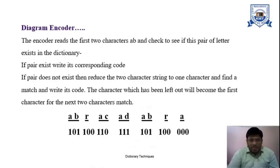AB is 101, R is 100, AC is then encoded, then AD is encoded, AB is encoded, then for R and for A.